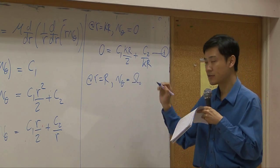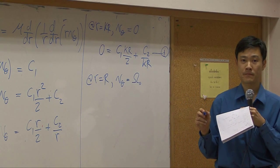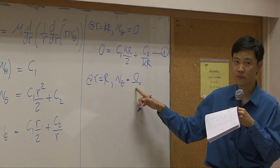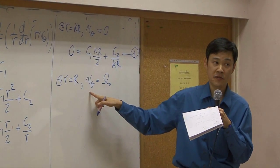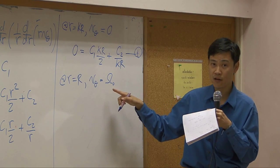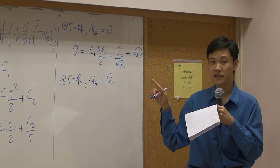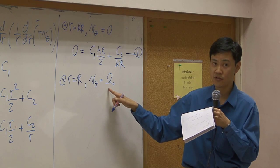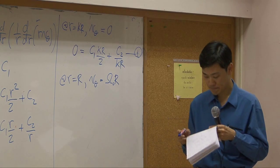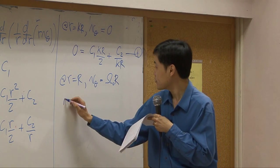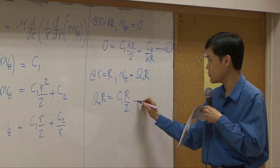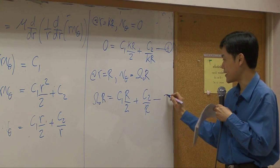Is it equal to omega zero? Be careful here, because omega zero is angular velocity, but velocity that we use here is linear velocity. So you must convert it by multiplying by the distance from the center. Put it back, you will have omega R equal to c1 R over 2 plus c2 over r. That's the second equation.